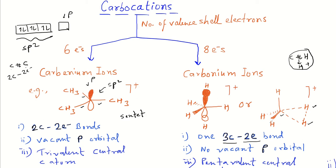The octet is filled up in carbonium ions, which is why the 'onium' term is used. The 'inium' term applies to carbon systems where there is a deficiency of electrons. Onium species are those where the octet rule is fulfilled. Another important feature is that there is no vacant p orbital in carbonium ions.